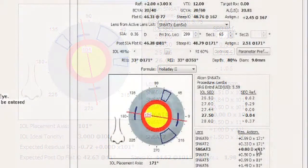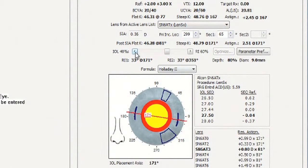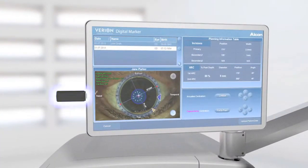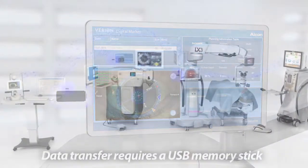Surgeons can now determine optimum incision locations to individualize surgically induced astigmatism and toric lens powers at the same time. The reference image and surgical plan are transferred from the Veryon reference unit to the Veryon digital marker via USB stick.